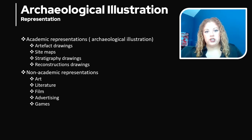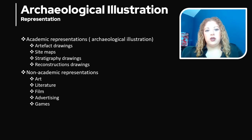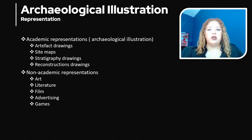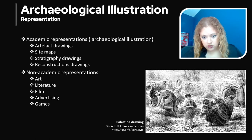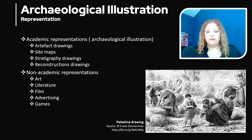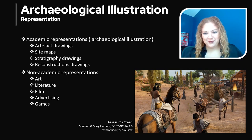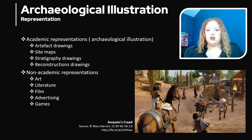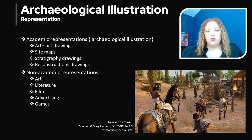All depictions of archaeological things fall under two different types of representation: academic representations, which include archaeological illustration, and non-academic representations, which are things like art, literature, film, advertising, and games. This is an example of a non-academic drawing — although it is historical, it is not factual. Here's another one you may be familiar with: Assassin's Creed. Although it is a historical game, it's not exactly accurate. The non-academic type is not concerned with science, authenticity, or accuracy.